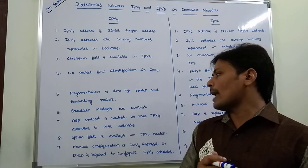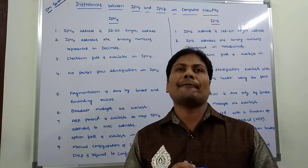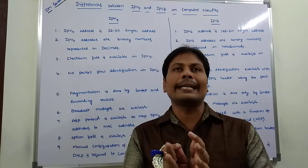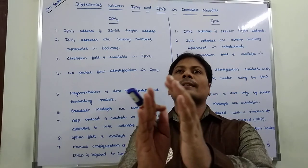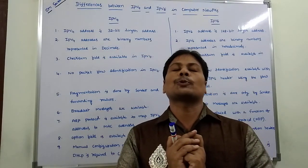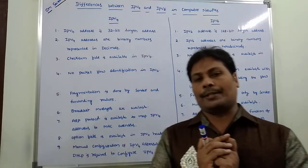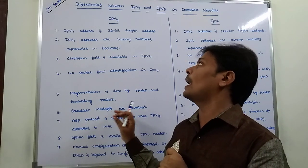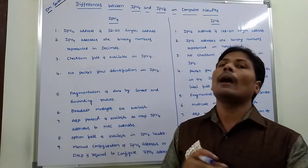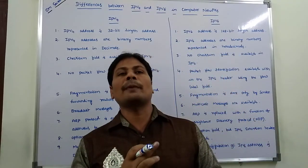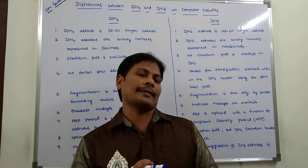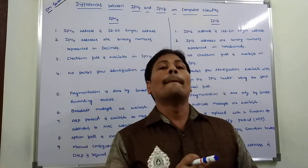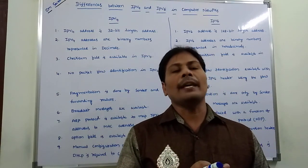Sixth point: broadcasting messages are available in IPv4. A single sender sends a message, and many receivers receive it — that is broadcasting. But in the case of IPv6, multicasting messages are available; we use the multicasting facility in IPv6.